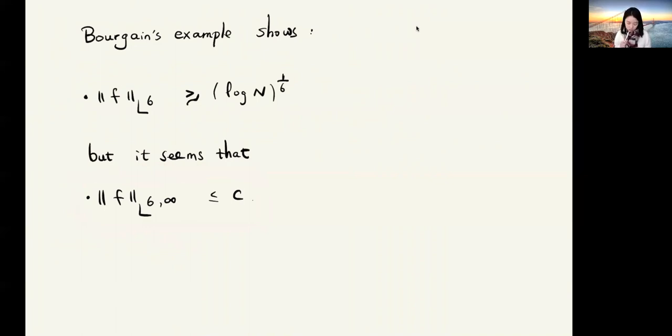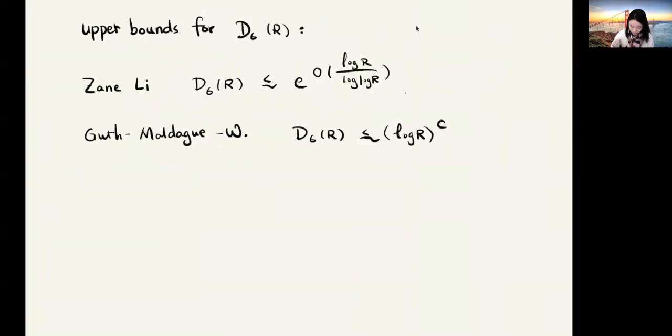But it seems that this example does not give a counter example to this weak L^6 bound. So we might conjecture that the weak L^6 bound is bounded by a constant times the L^2 norm of the initial data. But we don't know how to prove it. So let's look at some positive results.